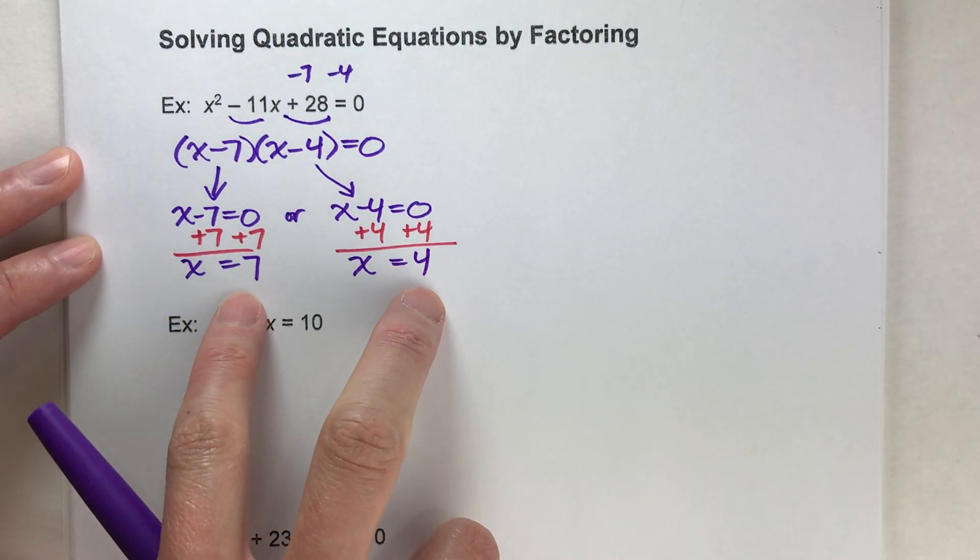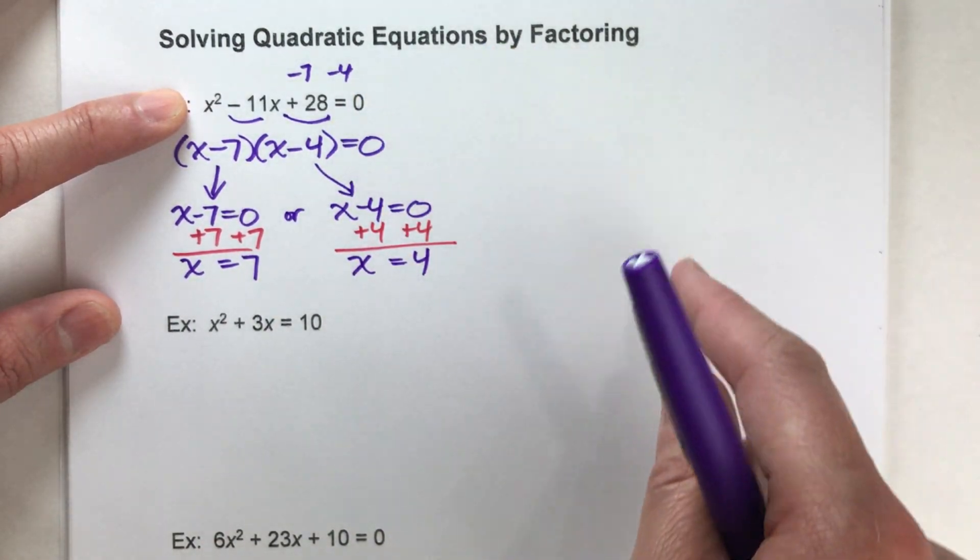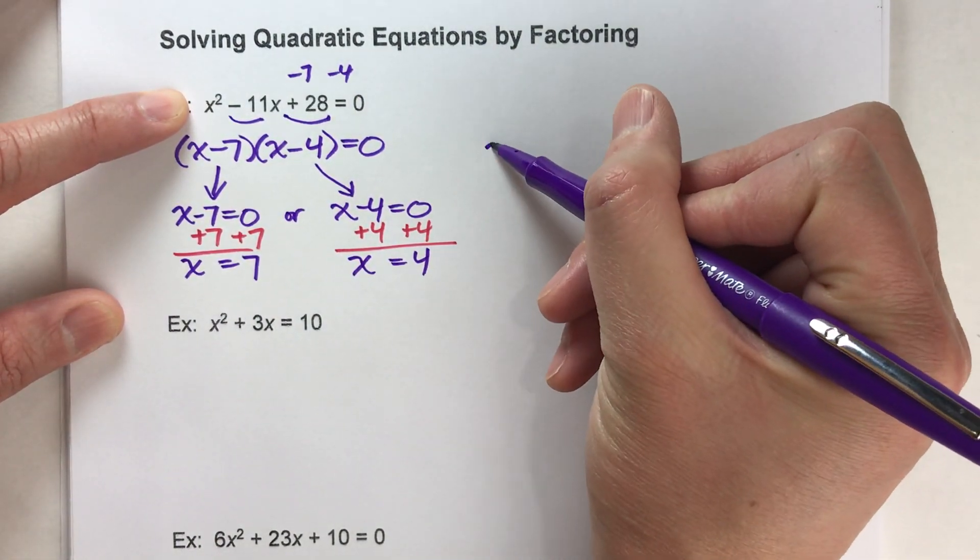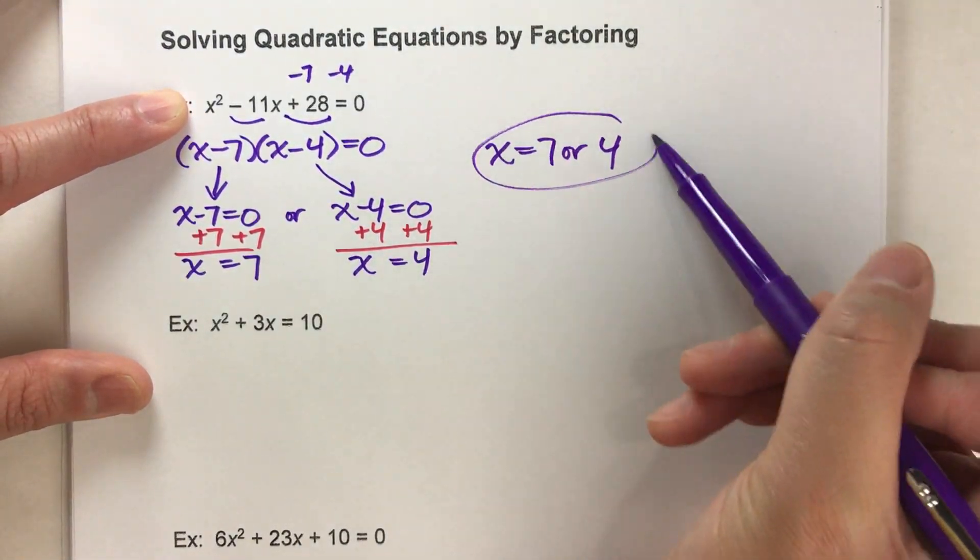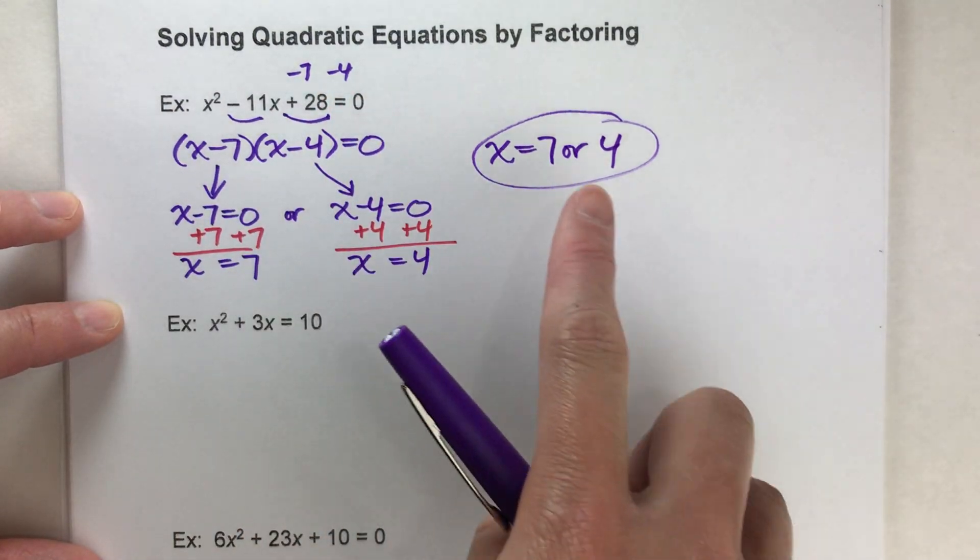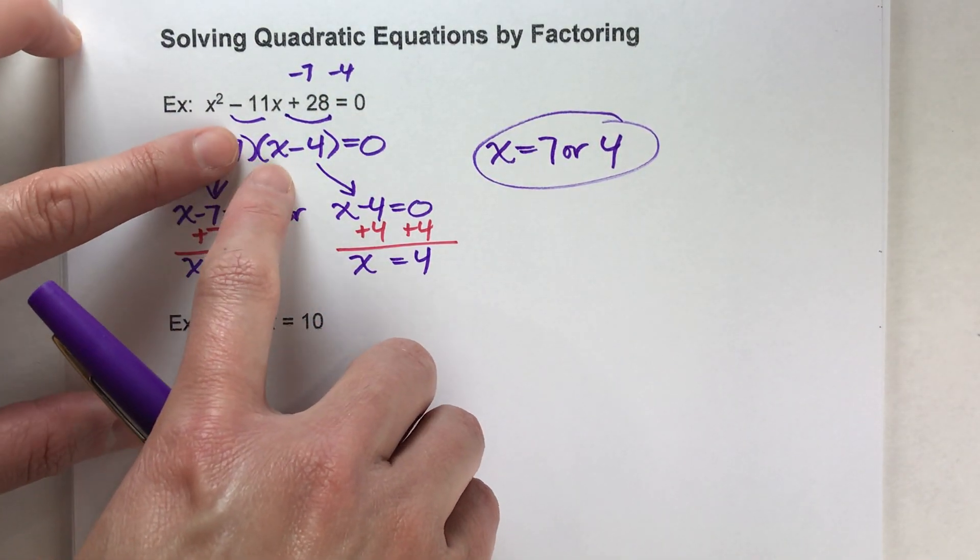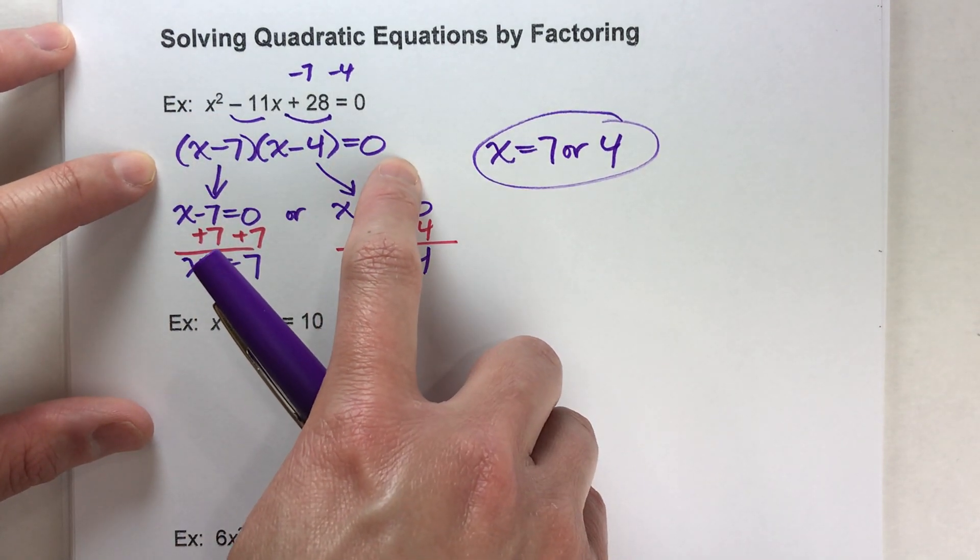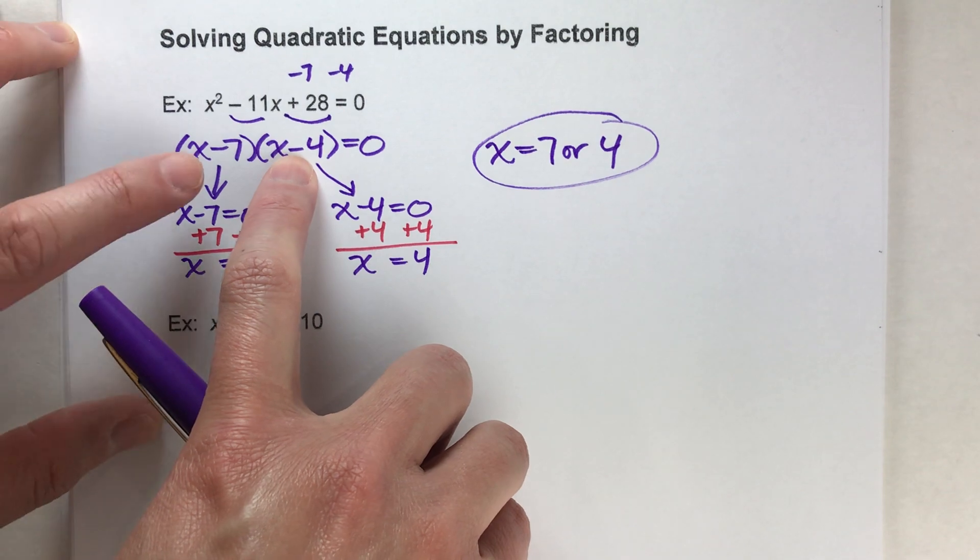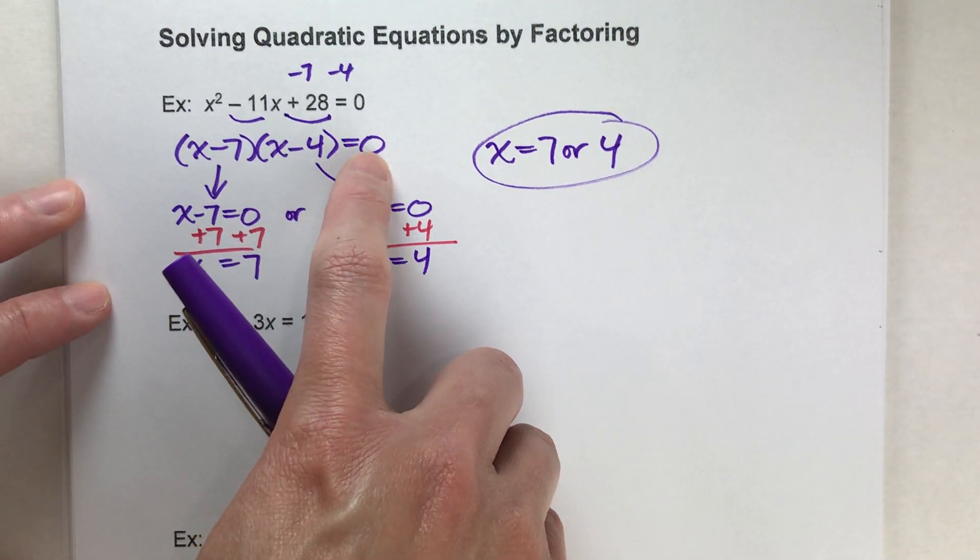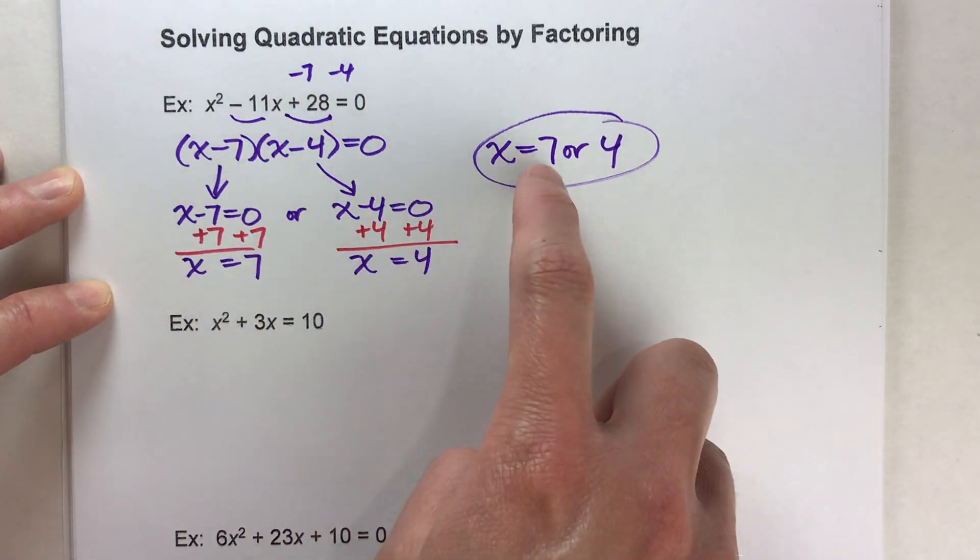These are the two possible values of x that solve that quadratic equation. Our solution is x equals 7 or 4. Either one of these will work and we know that because if we put 7 into here we get 0 times 3 which is equal to 0, or if we put 4 into here we get 0 times negative 3 which also equals 0. That's how the factoring works to solve the quadratic.